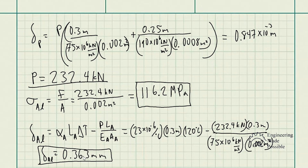The aluminum rod deforms 0.363 millimeters; the remainder of the 0.5 millimeter gap is accounted for by the steel rod's deformation. This is how you solve thermal expansion problems with contact gaps. The thermal expansion equation itself is straightforward: coefficient of thermal expansion times the original length times the change in temperature gives you the free thermal deformation. When rods are constrained beyond a gap, stresses develop — these are called thermal stresses.